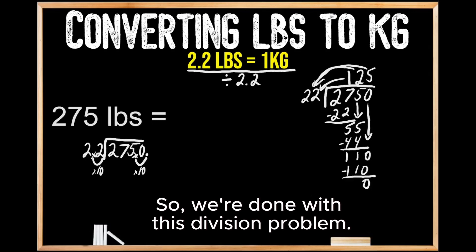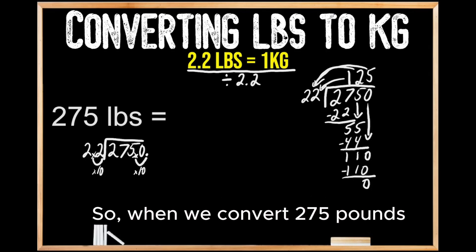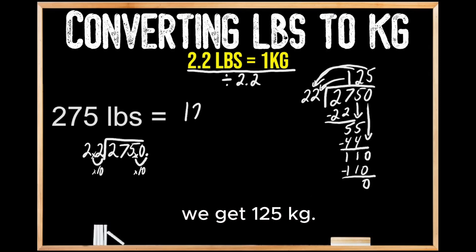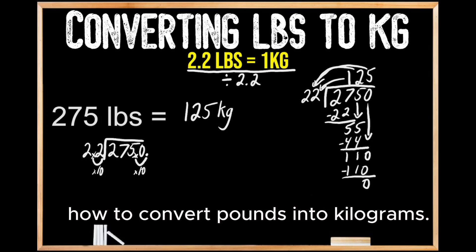So we're done with this division problem. When we convert 275 pounds into kilograms, we get 125 kilograms. So hopefully by now you understand how to convert pounds into kilograms.